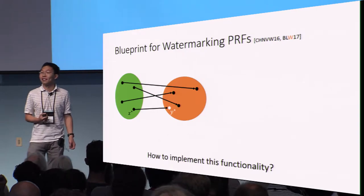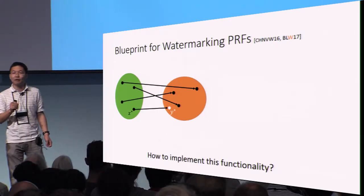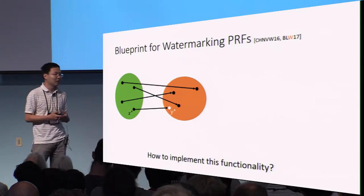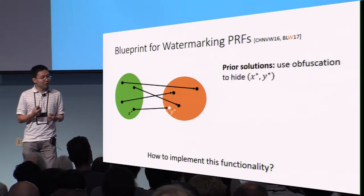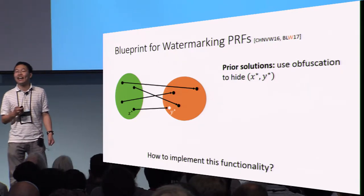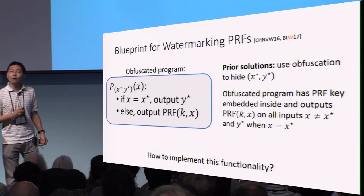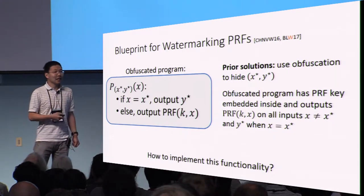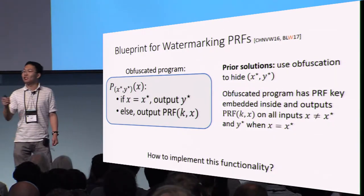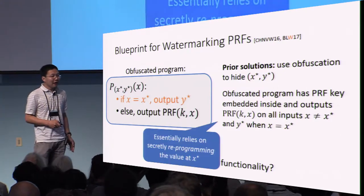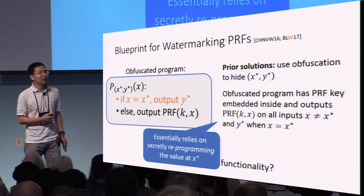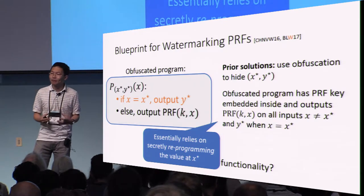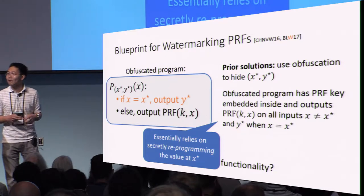Now let's see how we actually implement this functionality. We have this idealized functionality where we want to tweak the value of the PRF at one point, and secretly hide and embed that point within the watermark program. All of the prior solutions — due to Cohen et al. as well as Boneh et al. — rely on some kind of obfuscation to hide the special point x* and y*. Effectively, all of these works obfuscate a program that has the PRF key hardwired inside it, checks if it's asked to evaluate at the special point x*, outputs the special value y*, otherwise outputs the real value of the PRF. The reason we require obfuscation is we need to hide the details of the code and secretly embed the watermark within the program such that it is difficult to remove.